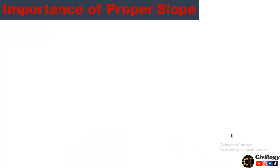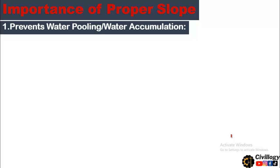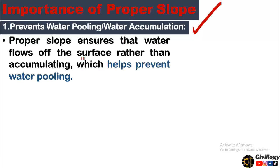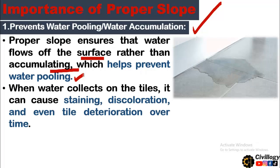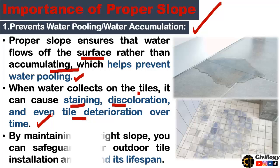First, let us understand the importance of proper slope. We need to provide a proper slope to prevent water pooling and water accumulation. Proper slope ensures that water flows off the surface rather than accumulating. As you can see in this picture, when water collects on the tiles it can cause staining, discoloration, and even tile deterioration over time. By maintaining the right slope, you can safeguard your outdoor tile installation and extend its lifespan.